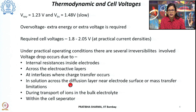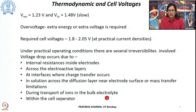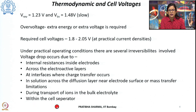There is a compact layer and a diffuse layer, and voltage drops can occur because of mass transport limitations. During transport of ions in the bulk electrolyte there may be additional resistance within the cell separator. All these factors contribute towards voltage drop within an electrolytic cell under practical operating conditions.